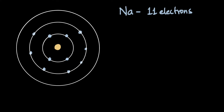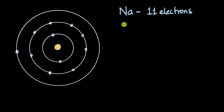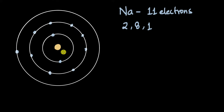In fact, for a sodium atom, the first shell has two electrons, the next shell has eight electrons, and the outermost shell has one electron. That is how the electrons are distributed. But why does the first shell have only two electrons? Is there a limit to the number of electrons a shell can have?